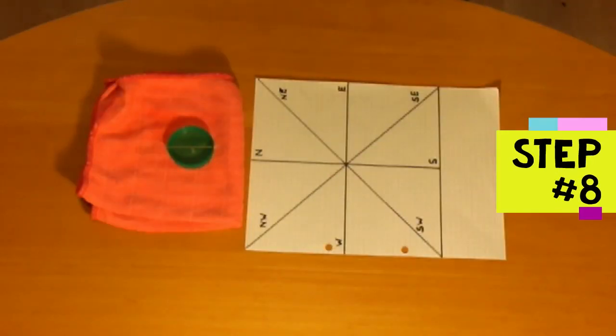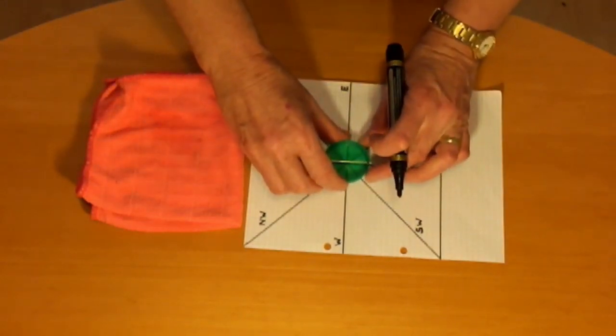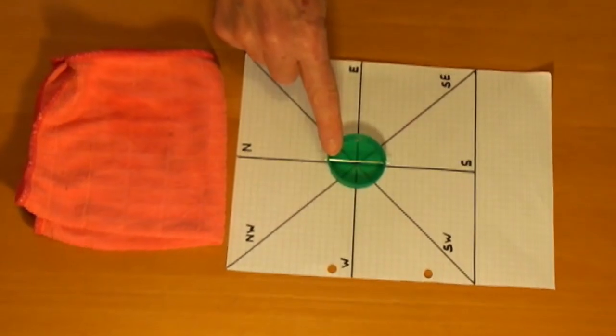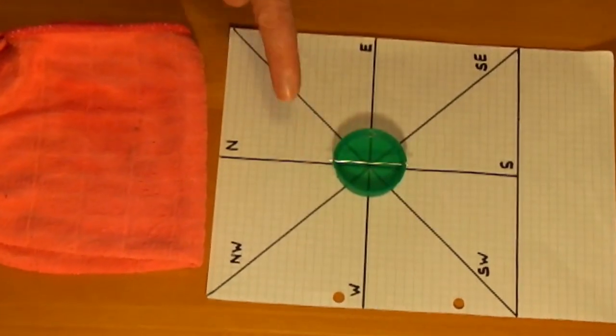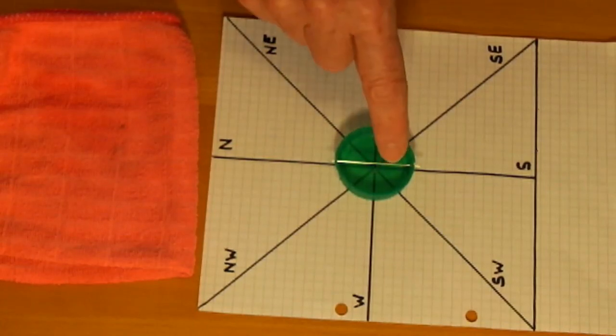Step 8 is to mark up the compass dial. Place the bottle lid on the paper with the hole in the middle of the cross and the correct end of the needle pointing south. Mark the 8 points of the compass on the rim and then write on the lid N for north, S for south, E for east and W for west.